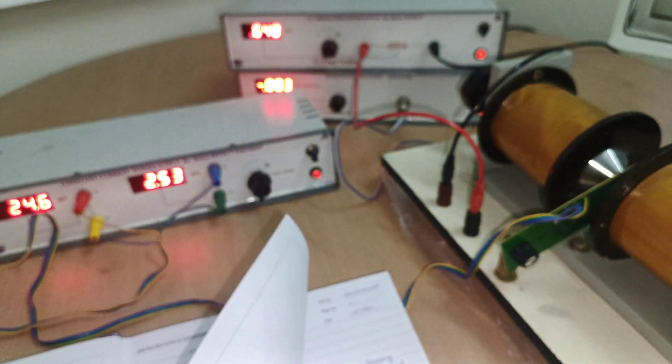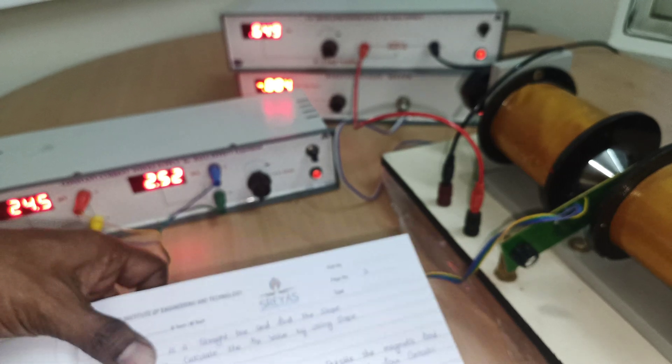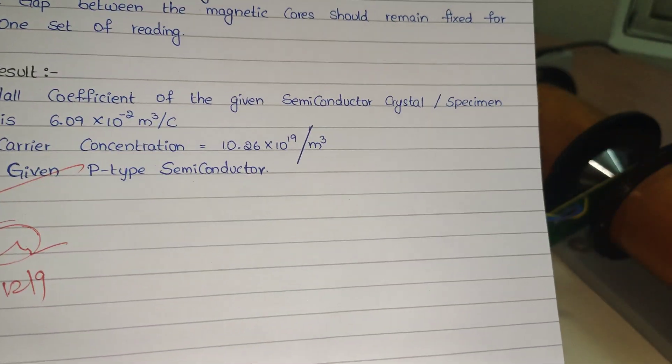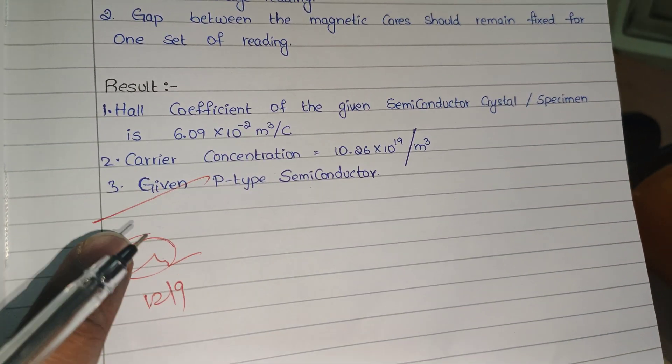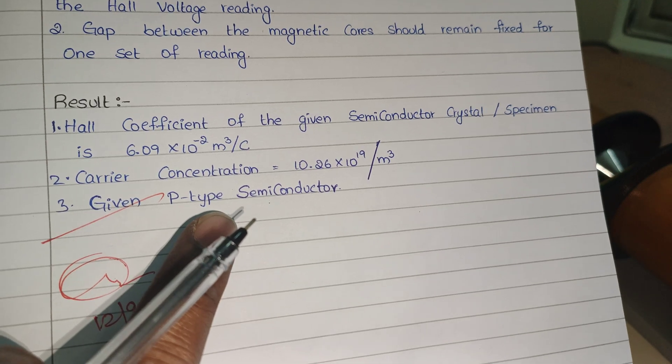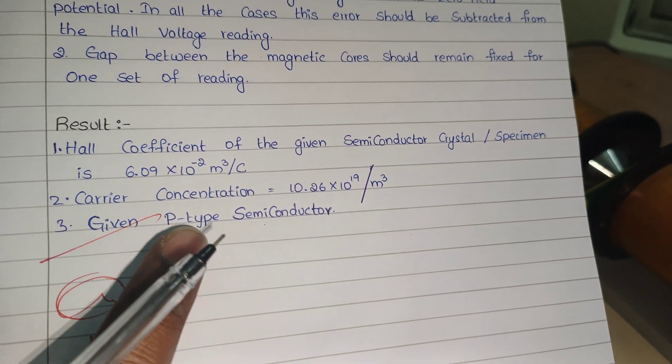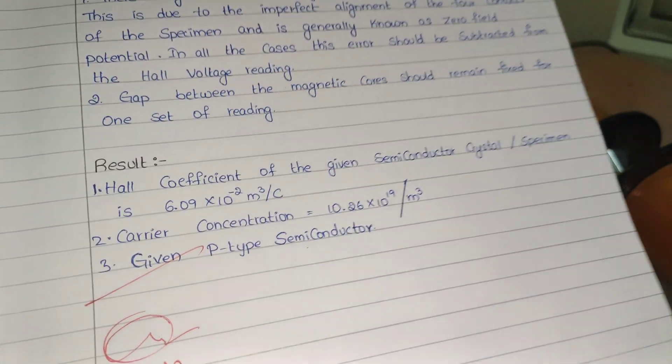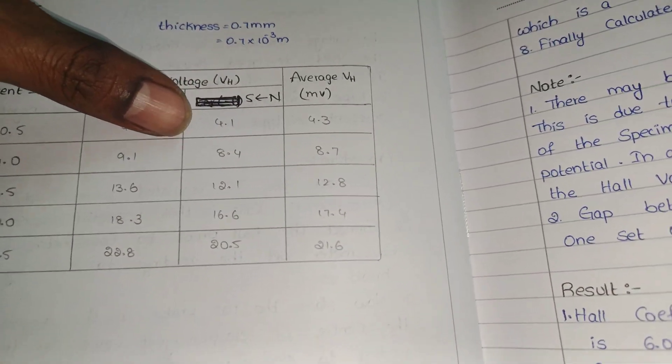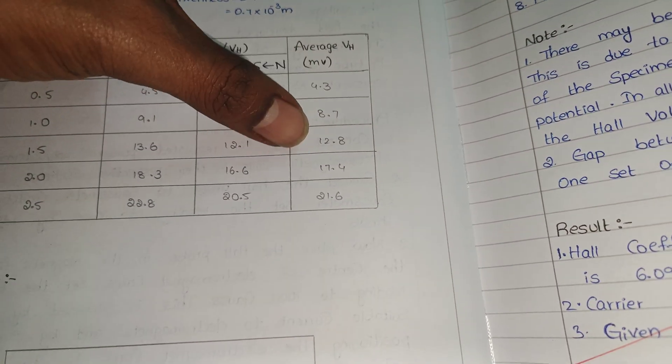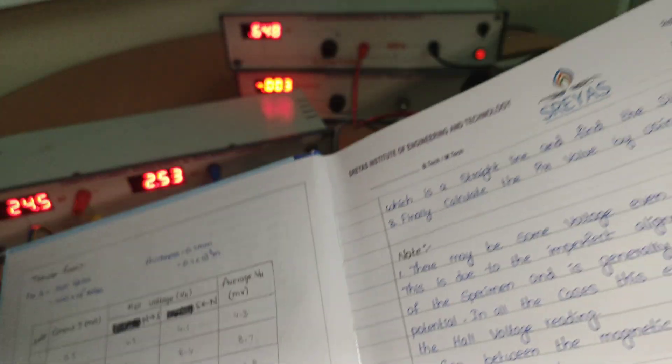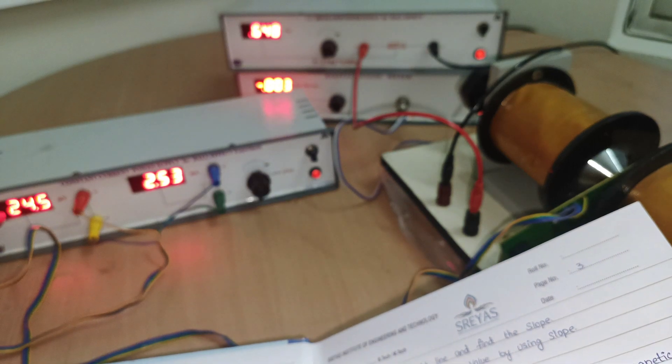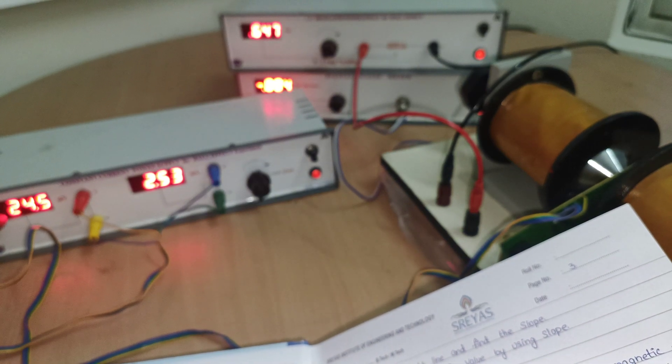Once you get the value, write in the result. Here we have the result: Hall coefficient value, carrier concentration, and the given semiconductor sample is p-type. Because here we are getting Hall voltage values in positive. If you are getting positive value, that is p-type. If you are getting negative value, that is n-type. Here you can see, if it is positive p-type, if it is negative n-type.